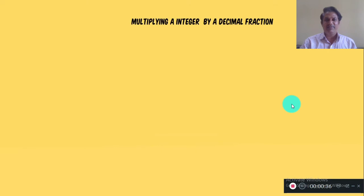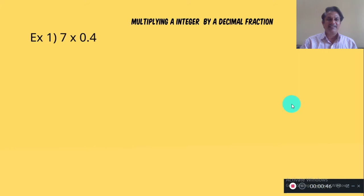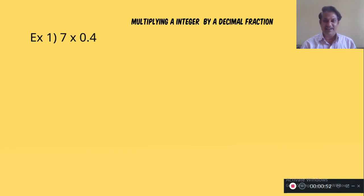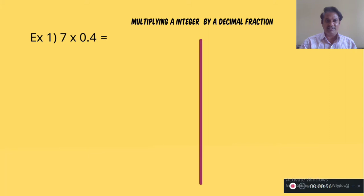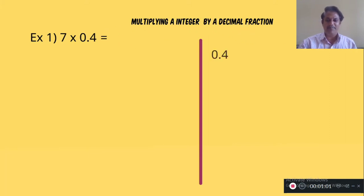First we will learn to multiply an integer by a decimal fraction. Observe the first example: 7 and 0.4. Here 7 is an integer and 0.4 is the decimal fraction. So first we will convert 0.4 into a common fraction. 0.4 means 4 divided by 10.